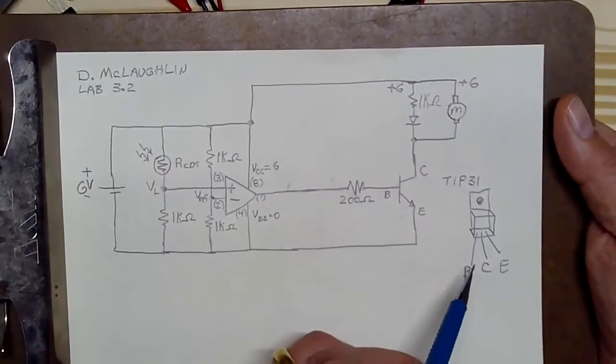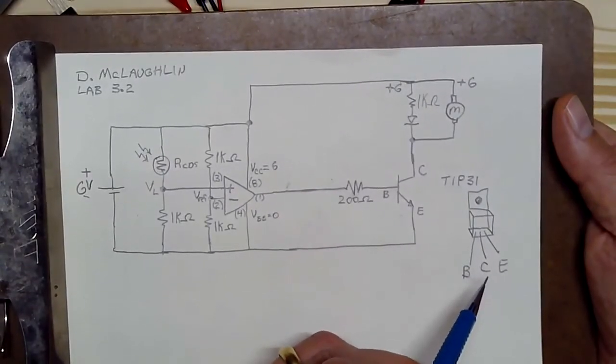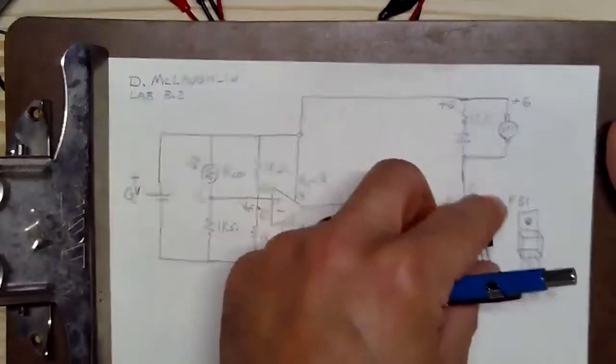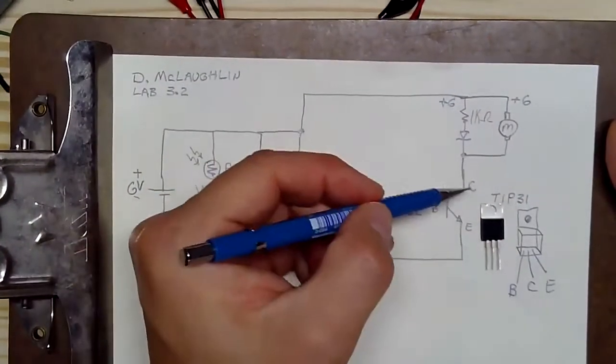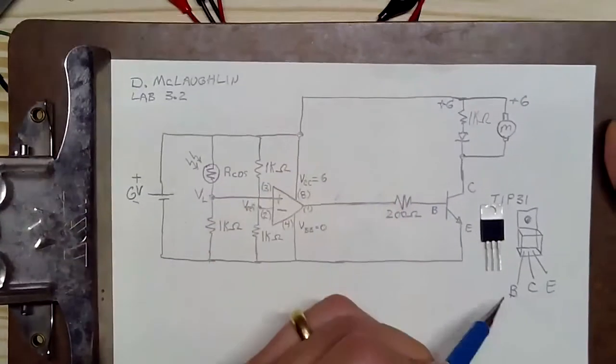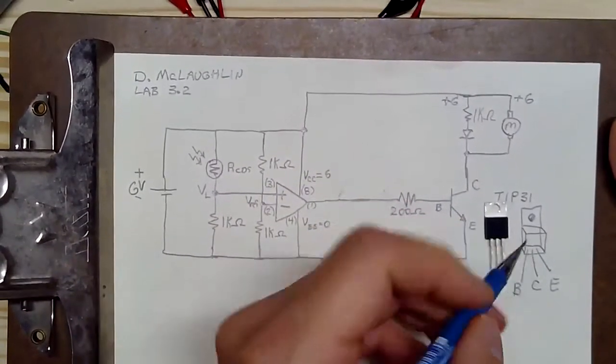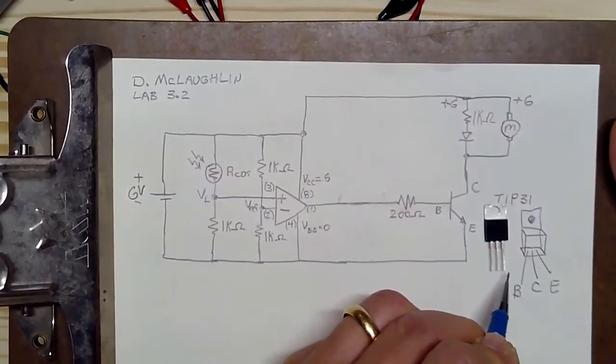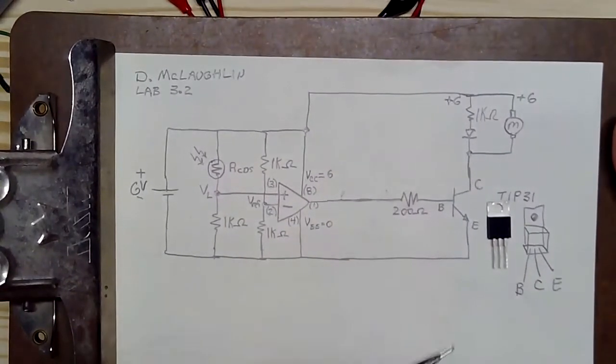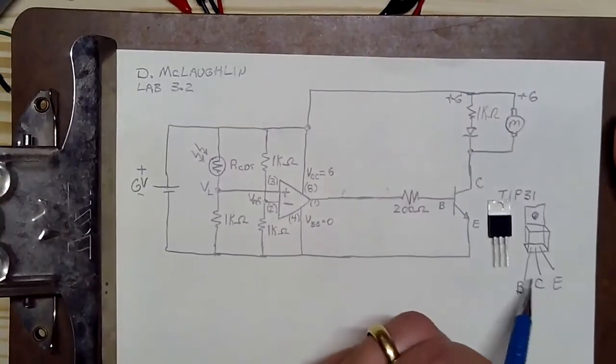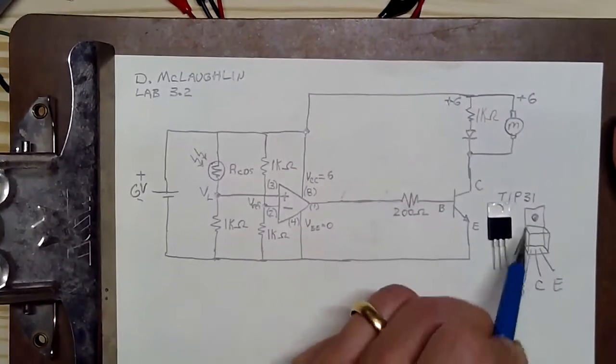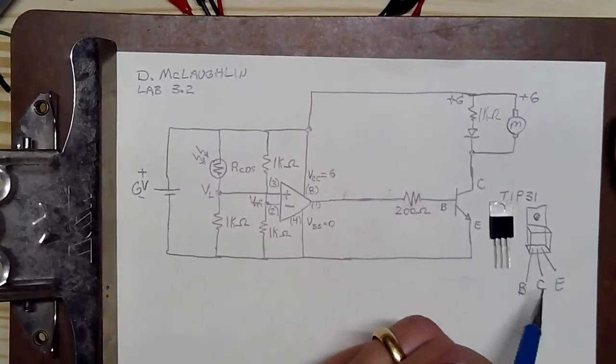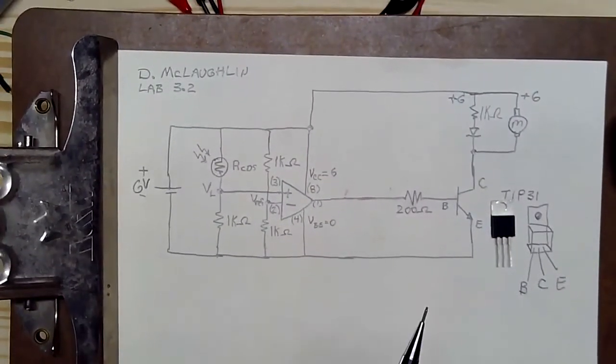Before we hook it up, just bear in mind the pin out for the transistor. When I take the transistor and I lay it down on the table so that the heat sink is touching the board and I look at it from the top, the pins are base, the collector and the emitter. Different transistors have different pin outs. You always want to make sure that you look up, you can just Google it or pull up the data sheet, tip 31 and it'll tell you which lead is the base, which is the collector, which is the emitter.